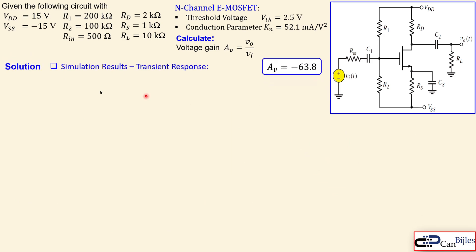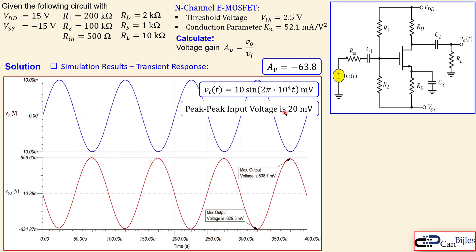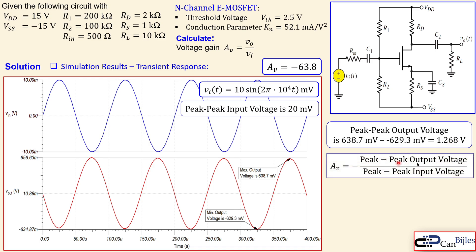In the simulation of the transient response, the blue line is the input at 10 mV peak at 10 kHz, and the red line is the output — inverted and larger in amplitude. The peak-to-peak output is 1.268 V while the input peak-to-peak is 20 mV, giving a simulated gain of −63.4, which is very close to the calculated −63.8.